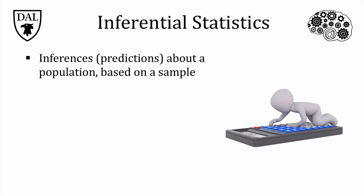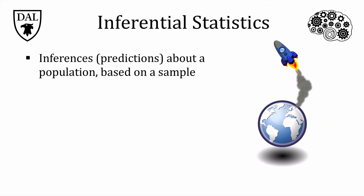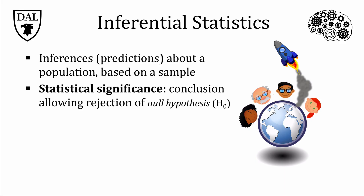The idea underlying this is that we usually can't test absolutely everyone we're interested in. If we're interested in human beings in general, we could try to test all the humans on planet Earth — and the handful of people on the International Space Station — but for obvious reasons this isn't possible; there are just too many of us. So researchers take a sample of the population to test and then make inferences about the population as a whole. The term used most often to describe inferential statistical findings is statistical significance — a conclusion based on statistics that allows researchers to determine whether they can reject the null hypothesis. The null hypothesis is usually a statement that there's no difference, and is typically the opposite of what the researcher hopes to find. Statistical significance is usually expressed as a p-value, and the conventional cutoff is less than 0.05, or 5%.